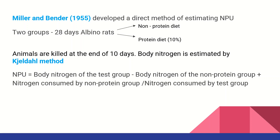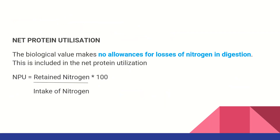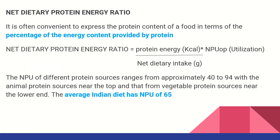Where is biological value relative to net protein utilization? The Net Dietary Protein Energy Ratio: 1 gram of protein provides 4 kilocalories. The formula is: protein energy divided by net dietary protein, into NPU (operational). The average Indian diet has an NPU of 65. This gives the net dietary protein energy ratio.